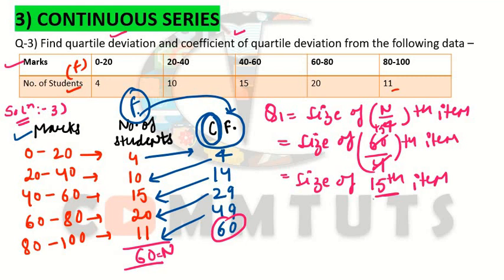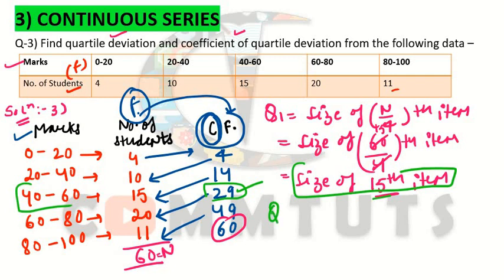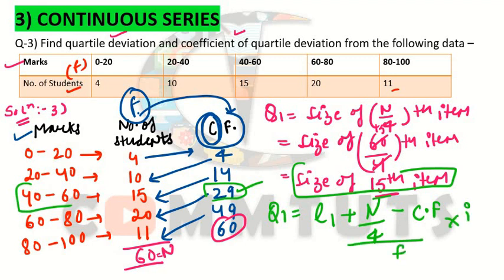The 15th item lies in the class 40 to 60, where the cumulative frequency is 29. Now we know which class Q1 lies in. Since this is a continuous series, we apply the Q1 formula: Q1 = L1 + [(N/4 − Cf) / f] × i, where L1 is the lower limit, Cf is the cumulative frequency of the preceding class, f is the frequency of the class, and i is the class interval.